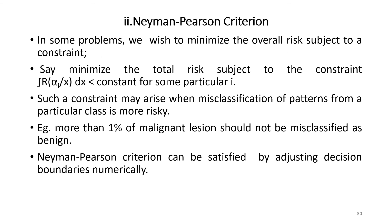In some problems, we minimize the overall risk subject to a constraint — for example, minimize the total risk such that the integral of the conditional risk is less than a constant for some particular class. Such a constraint may arise when misclassification of patterns from a particular class is more risky. For example, more than 1% of malignant lesions should not be misclassified as benign. This criterion can be satisfied by adjusting the decision boundaries numerically.